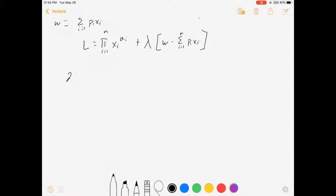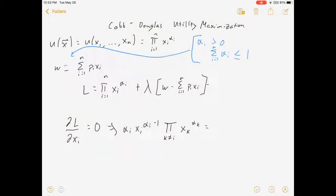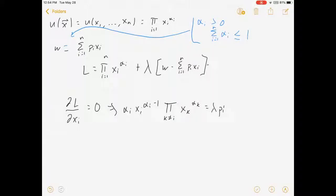All right, so for our first order conditions, we take the derivative of the Lagrangian with respect to good i. And I'm going to set that equal to zero. That's part of maximizing, right? What's this going to look like? Alpha i xi to the alpha i minus 1 times the product of all k's not equal to i of xk to the alpha k equals lambda pi. And so what have I done? I've separated this and I've left the rest of the utility function unchanged. That's what we would expect to do in our calculus.